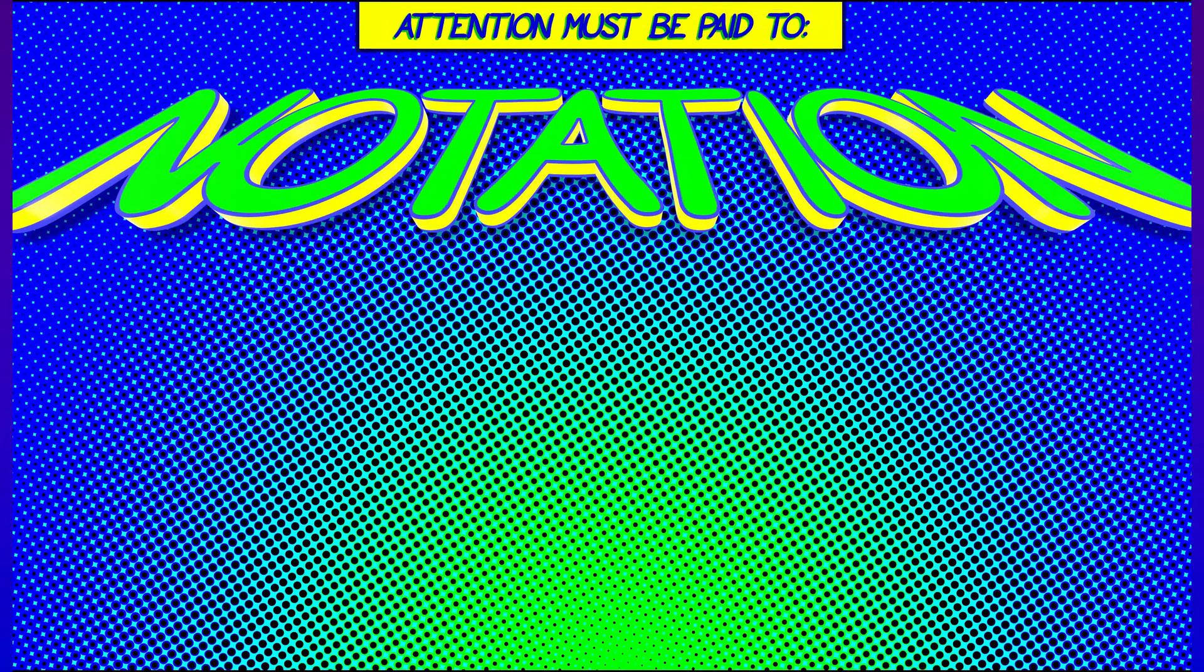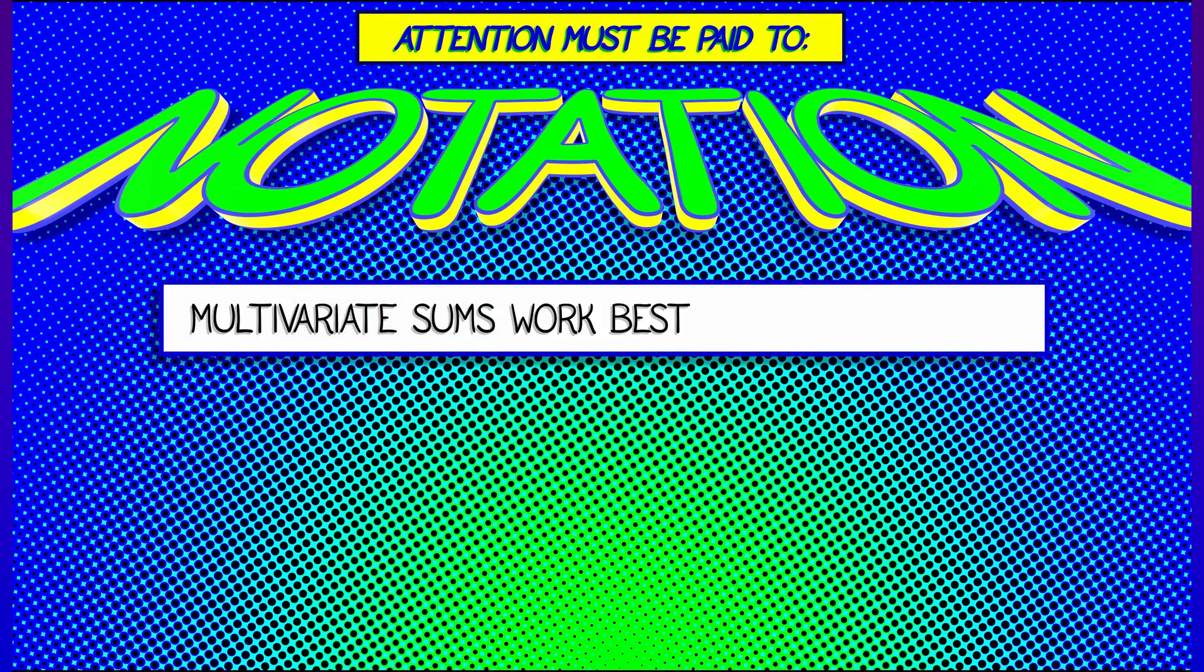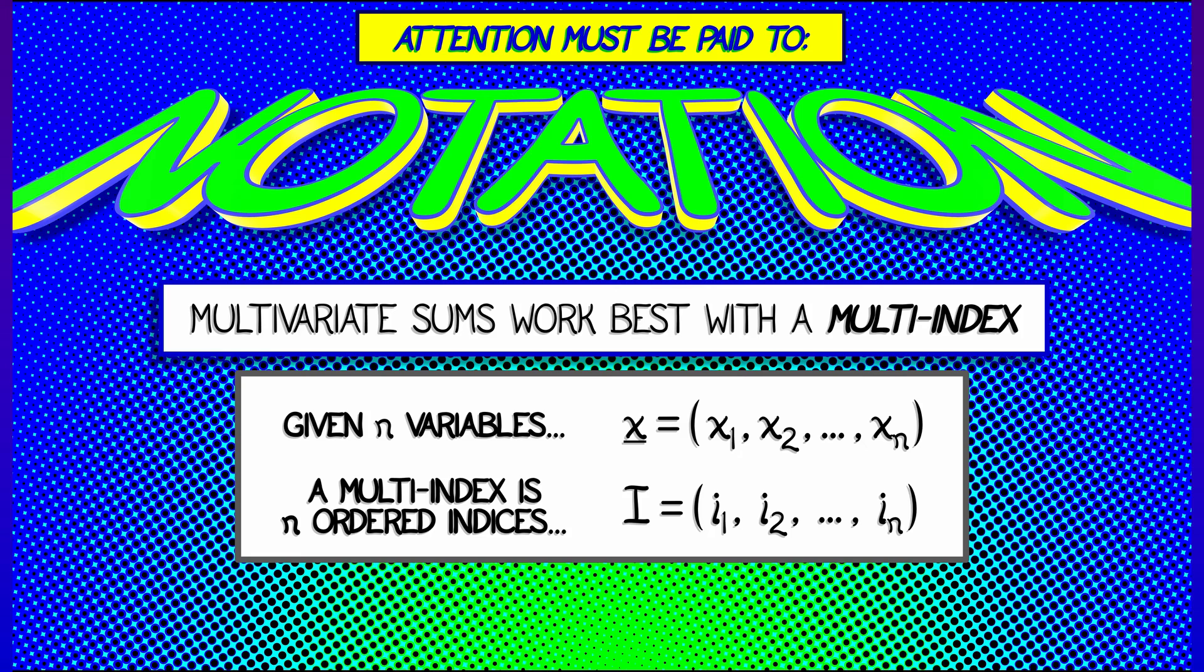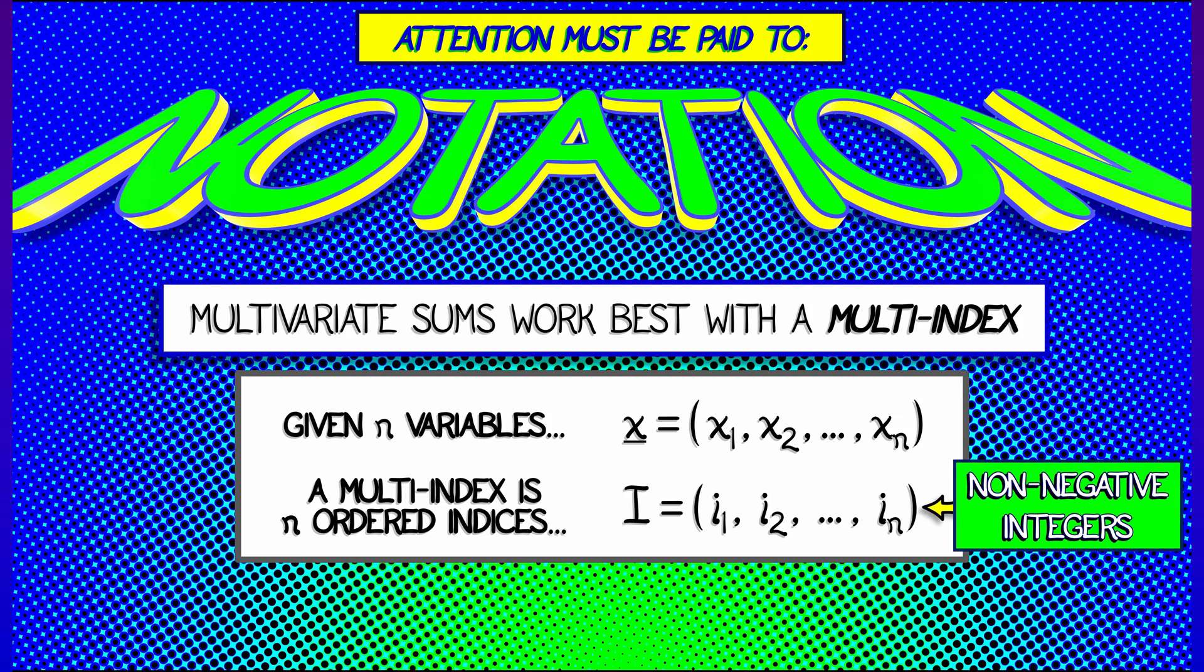So let's dive into the notation in the setting where we have n variables, x1, x2, all the way up through xn. Then a multi-index for this is going to be i1, i2, all the way up through i_n, a sequence of indices of non-negative integers. Call that capital I.